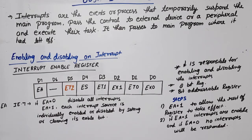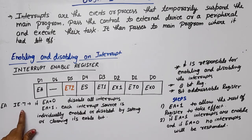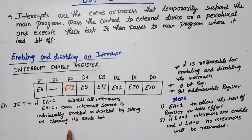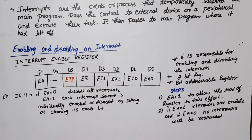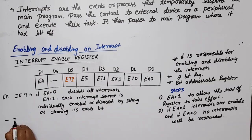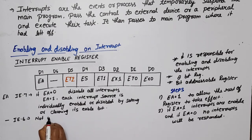Now I will discuss every bit one by one. The first bit is EA at position IE.7. If EA equals 0, it disables all interrupts — no interrupt will get a response. If EA equals 1, interrupts will be enabled, and each interrupt source is individually enabled or disabled by setting or clearing its corresponding enable bit.